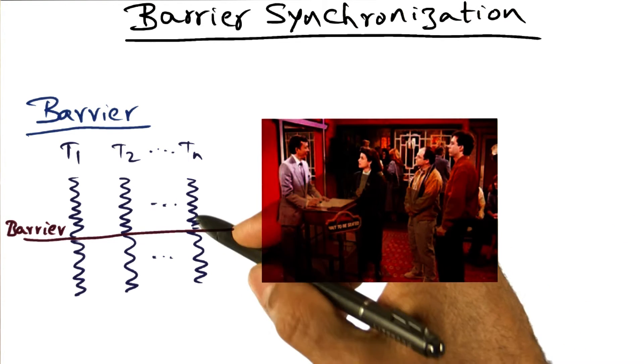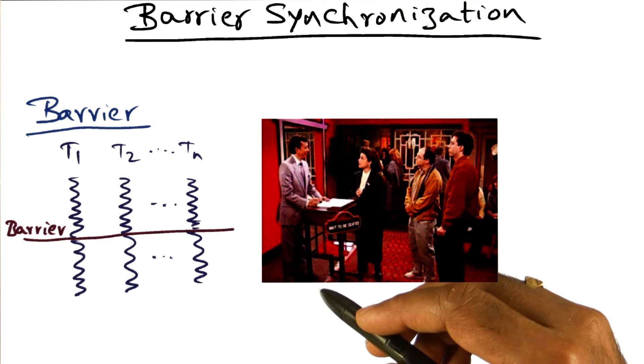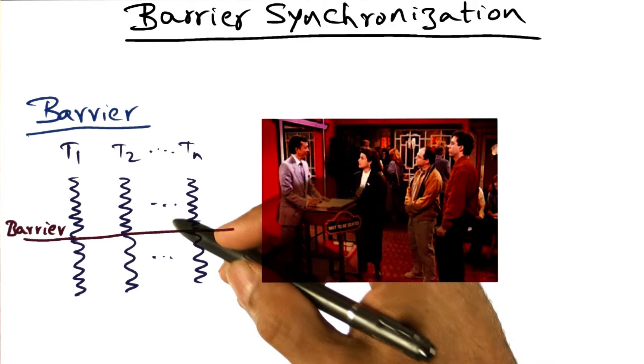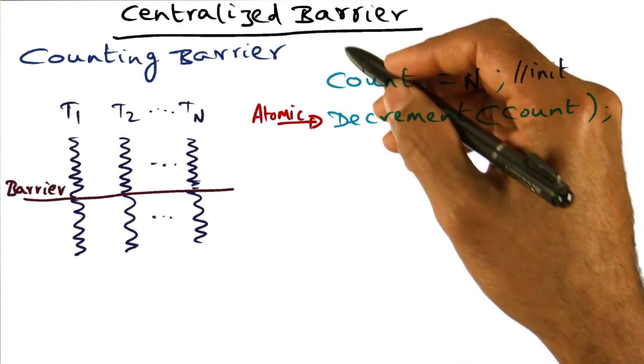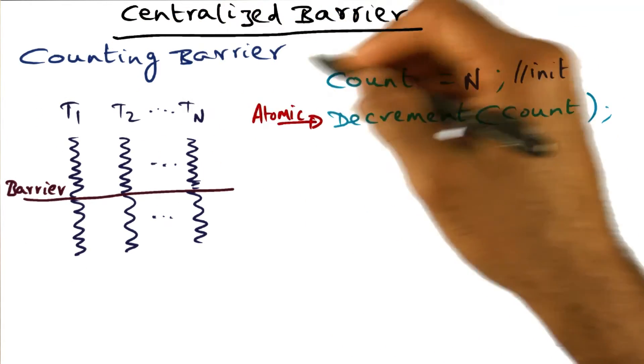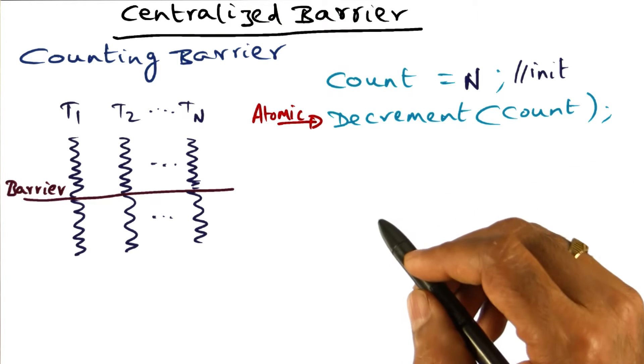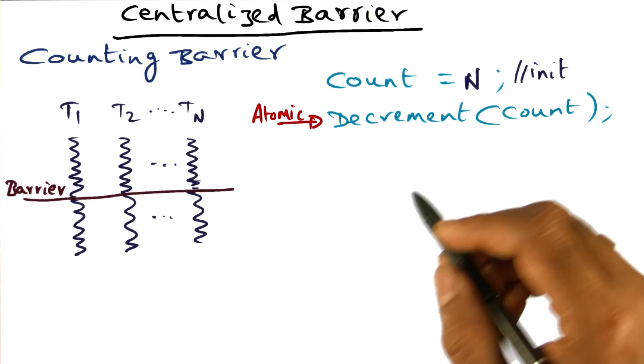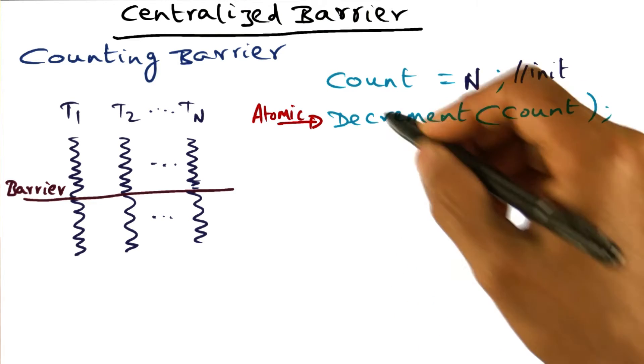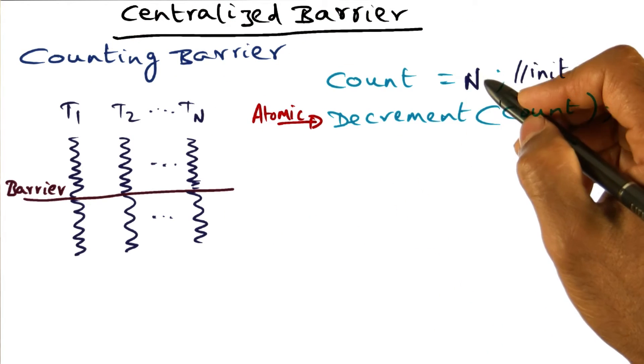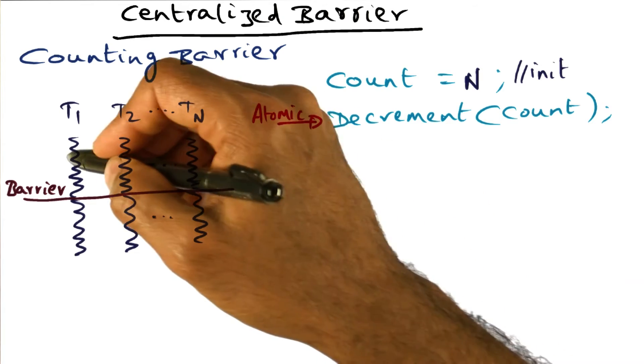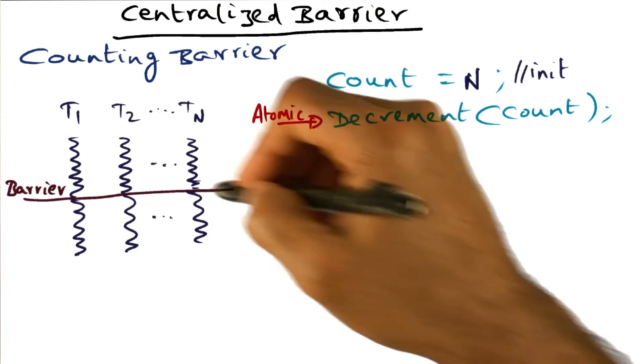I'm going to describe a very simple implementation of this barrier. The first algorithm is what is called a centralized barrier, or sometimes called a counting barrier. The idea is very simple. You have a counter—that's why it's called a counting barrier. The counter is initialized to N, where N is the number of threads that need to synchronize at the barrier.